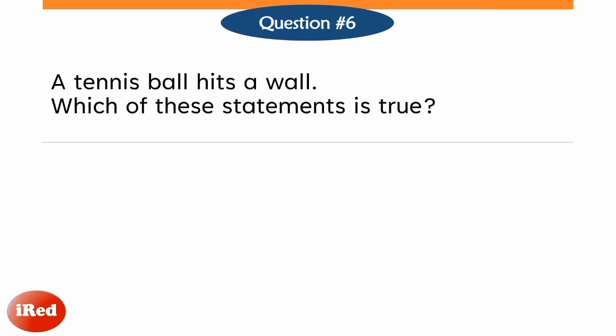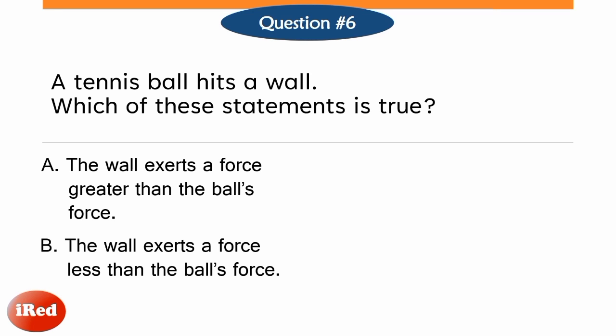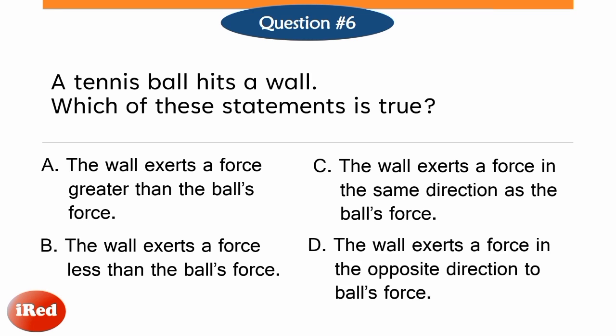A tennis ball hits a wall. Which of these statements is true? Letter A, the wall exerts a force greater than the ball's force. Letter B, the wall exerts a force less than the ball's force. Letter C, the wall exerts a force in the same direction as the ball's force. Letter D, the wall exerts a force in the opposite direction as the ball's force.